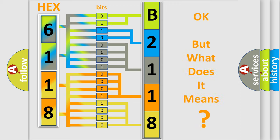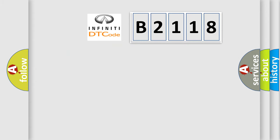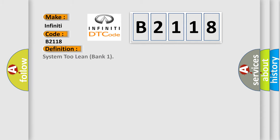We now know how the diagnostic tool translates received information into a more comprehensible format. The number itself does not make sense if we cannot assign meaning to what it expresses. So, what does Diagnostic Trouble Code B2118 interpret specifically for Infiniti car manufacturers? The basic definition is: System 2 Lean Bank 1.